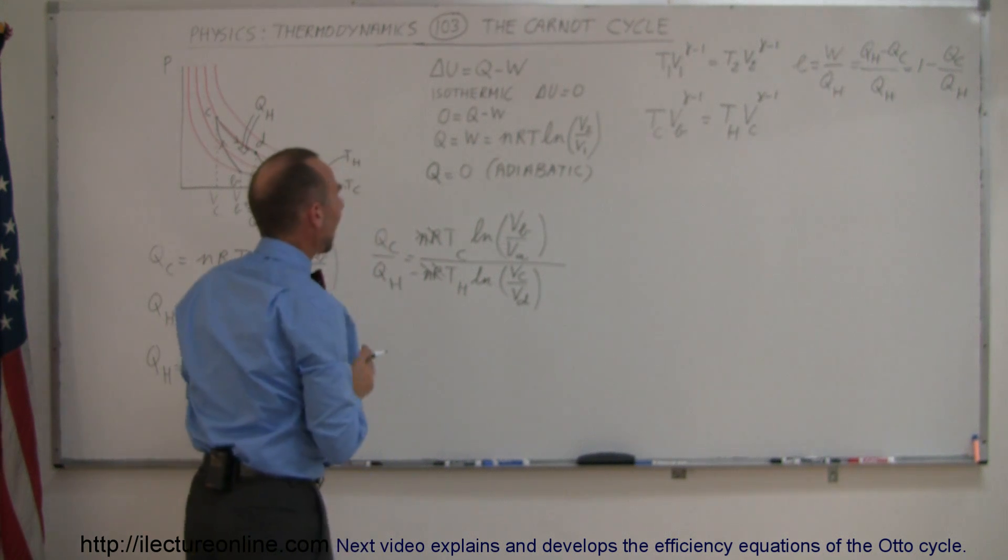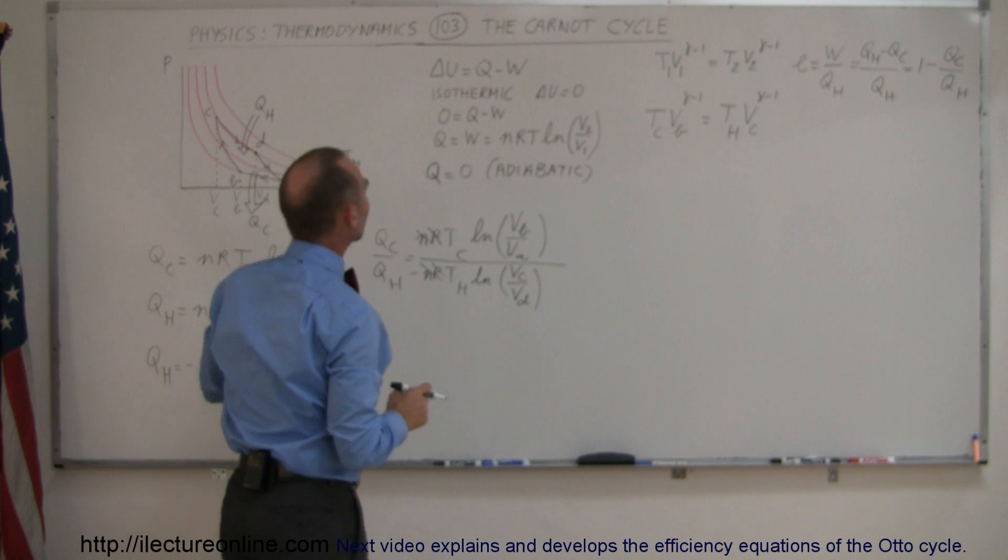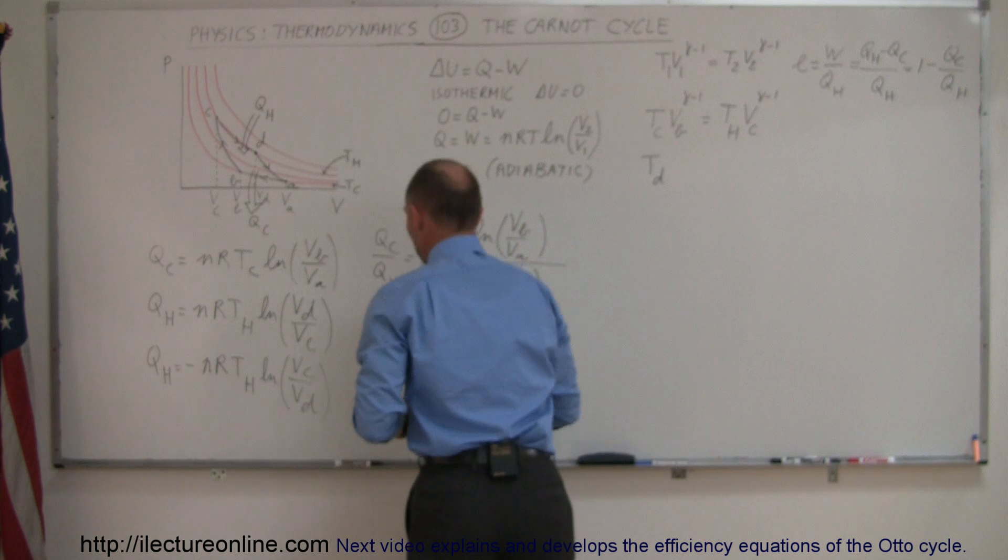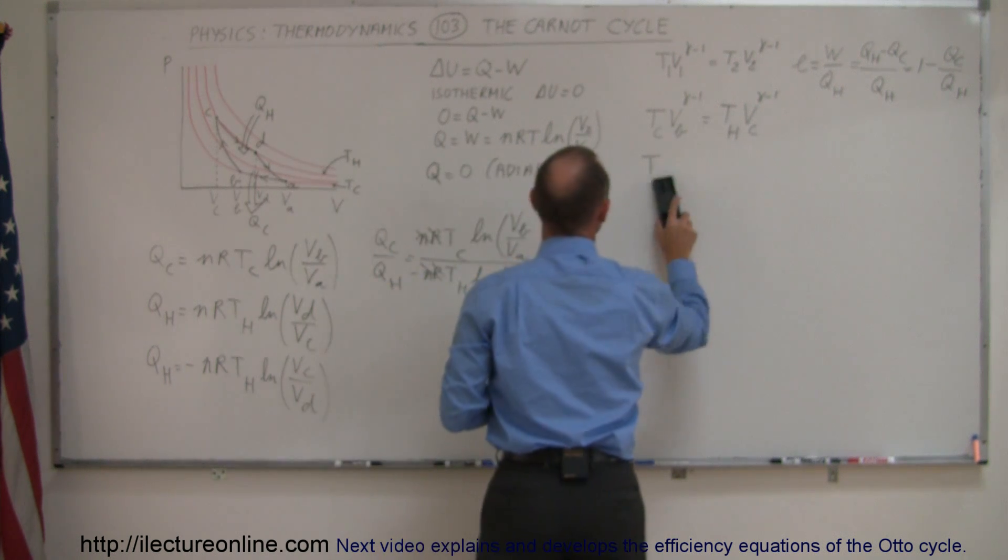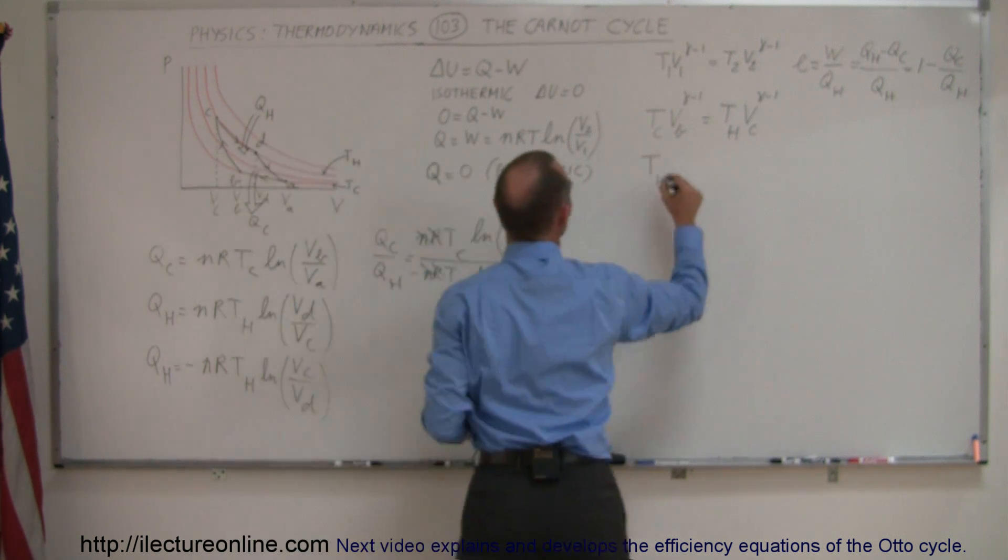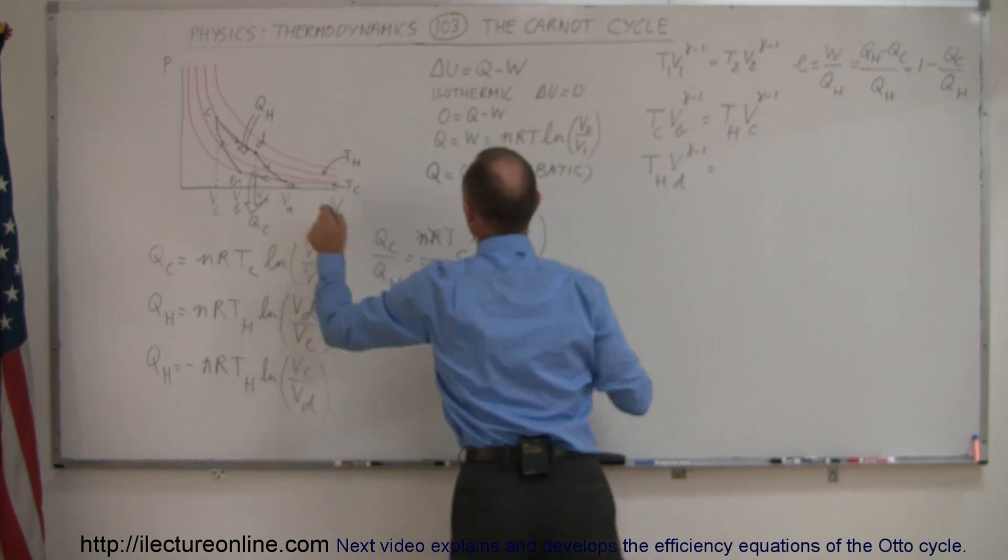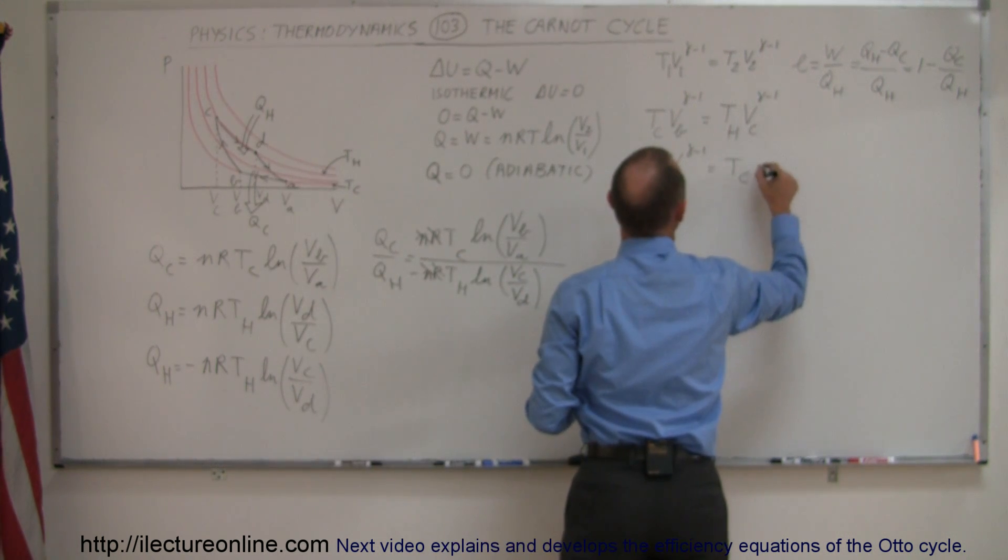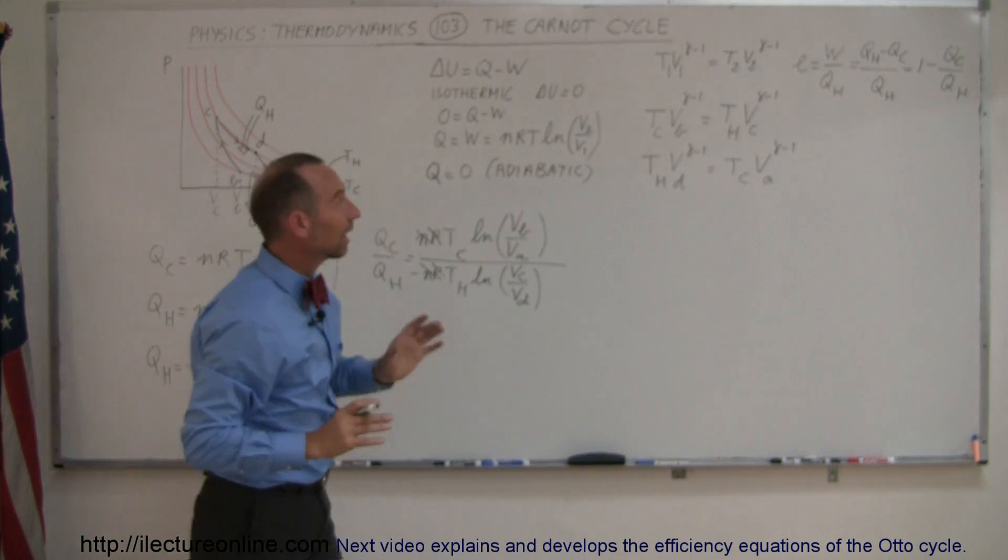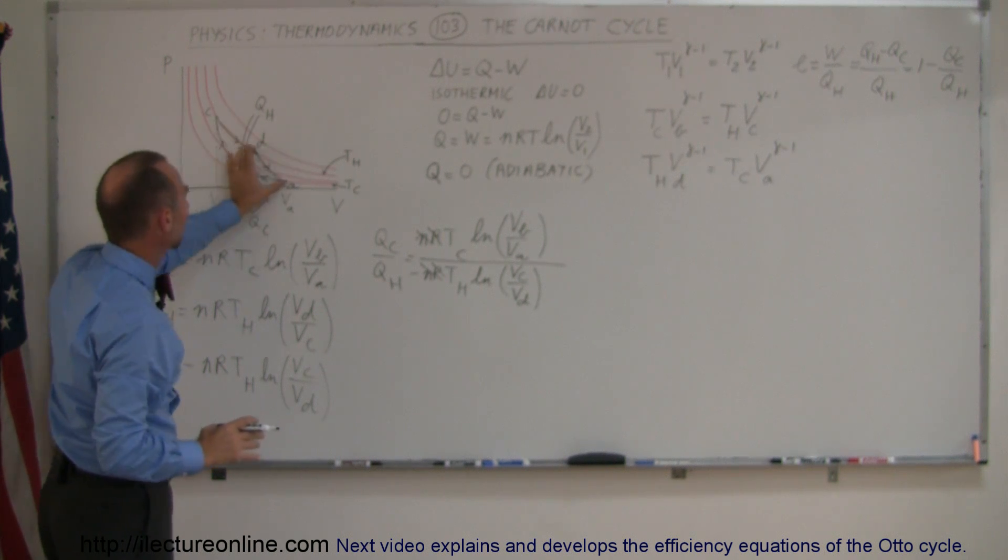We can also do that for the other process right here, going from D back to A, so we can say T at D - and of course T at D, that would be T_hot - so T_hot times V at D to the gamma minus 1 is equal to T_cold times V sub A to the gamma minus 1. So we use that equation to relate B and C and D and A because that's an adiabatic process.